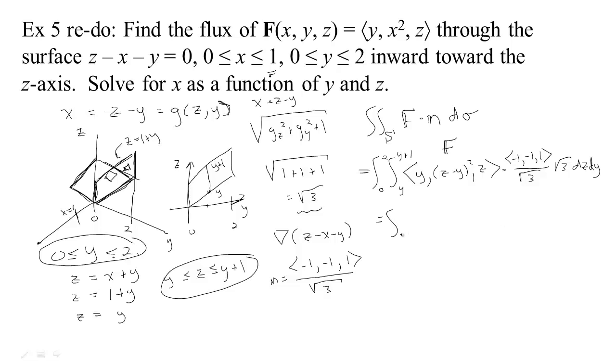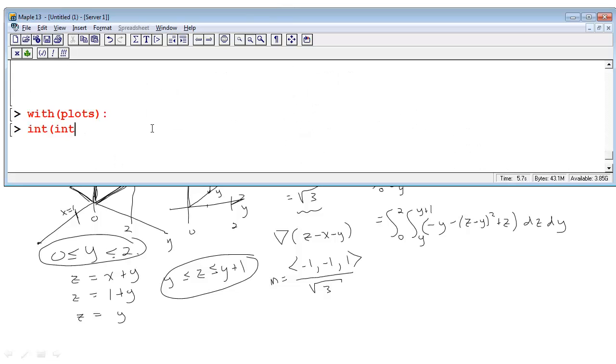So the integral I need to do is the integral from 0 to 2, and from y to y plus 1 of, let's see, the square roots of 3, those cancel. And if I do this dot product, I get negative y minus z minus y squared plus z. And that's the integral that I need to do, dz, dy. Now, just in the interest of saving time, I'm just going to go ahead and set this integral up in Maple. I've got an integral inside an integral. The thing I need to integrate is negative y minus z minus y squared plus z. So first I'm going to integrate z. Z goes from y to y plus 1.